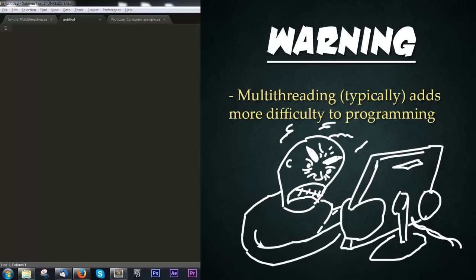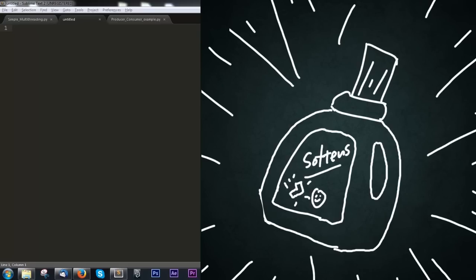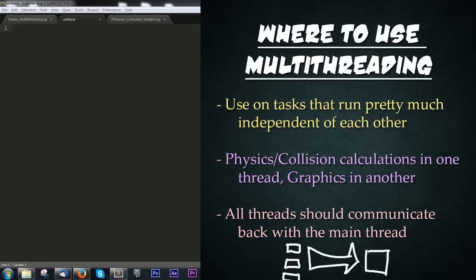Be warned: when you decide to multithread, you typically add difficulty to the programming task at hand. So where do we use multithreading? We use them on processes that are pretty much independent of one another. For example, you could be making a game that has physics and collision simulation calculations running on one thread while you have the graphics calculations to display the image on another separate thread. These are two independent systems that could run in parallel at the same time. All these threads communicate with one another through the main or master thread that is running the program.